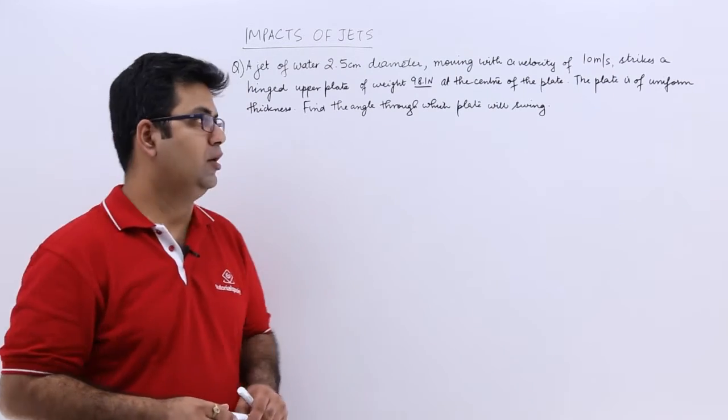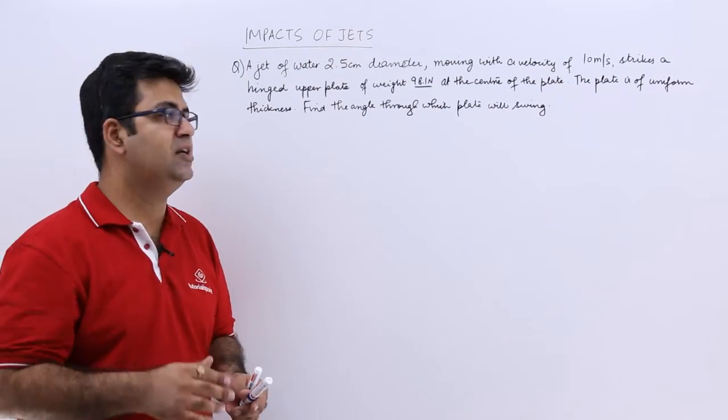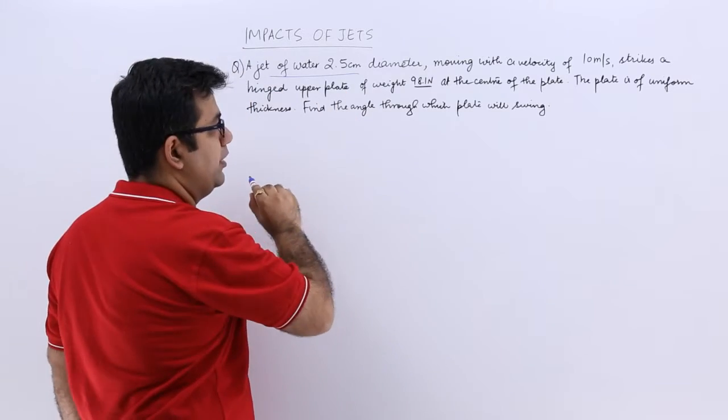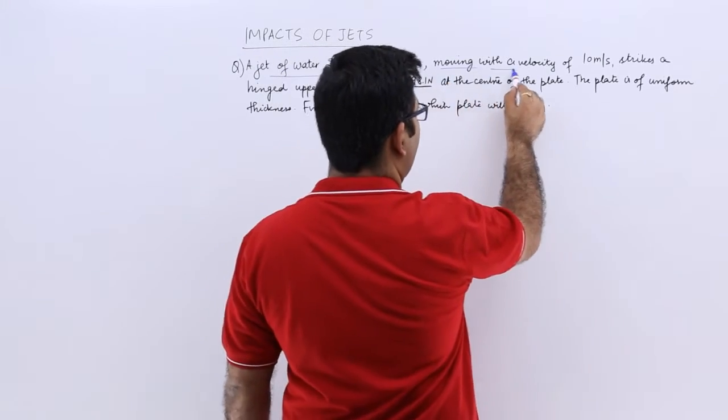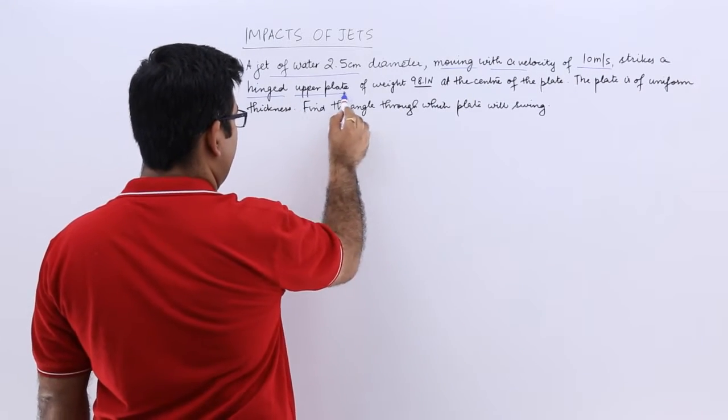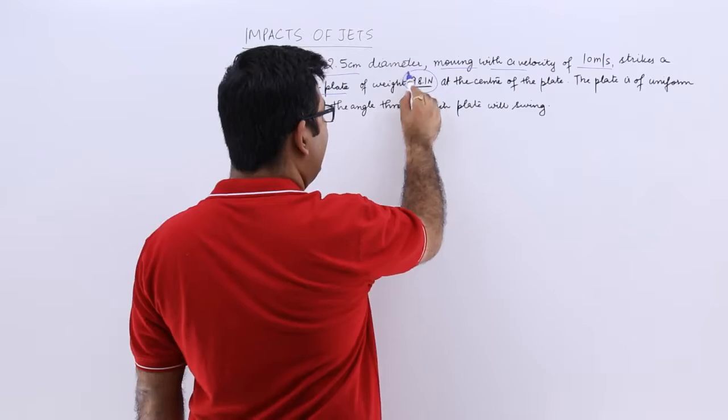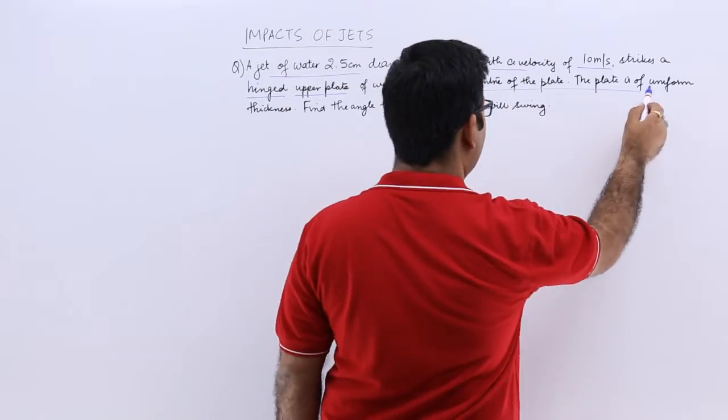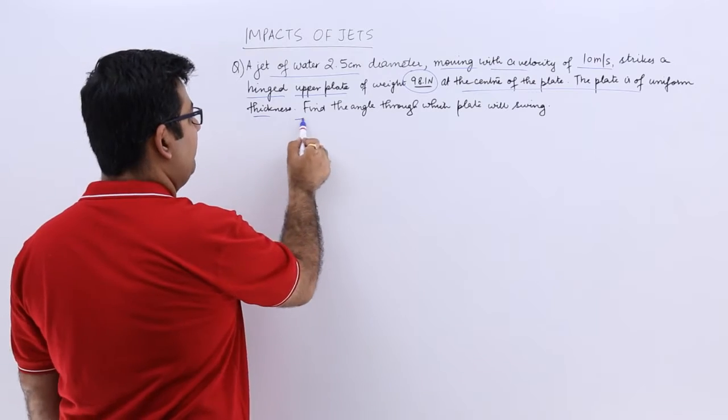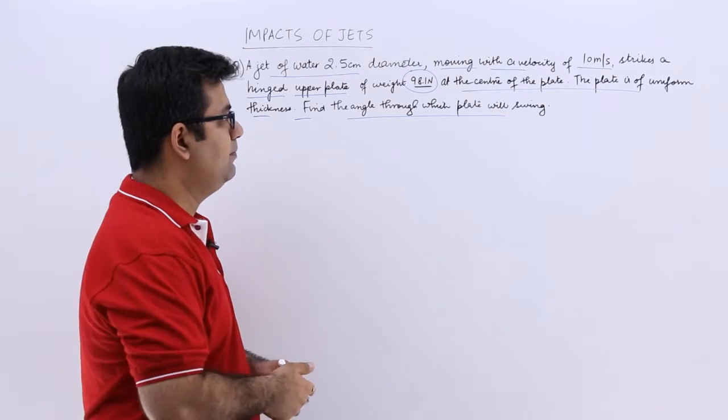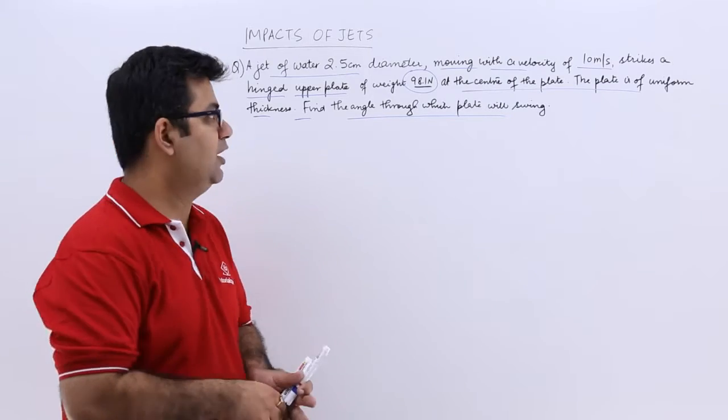Let's have a look at the numerical on the plate which is hinged. The question says a jet of water 2.5 centimeter diameter is moving with a velocity of 10 meters per second. It strikes a hinged upper plate of weight 98.1 newtons at the center of the plate. The plate is of uniform thickness. Find the angle through which plate will swing. So it is a very simple question based on simple formula application.